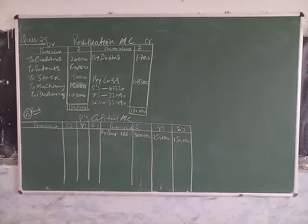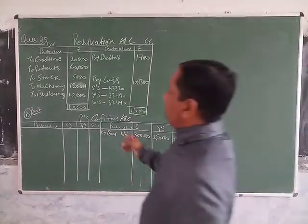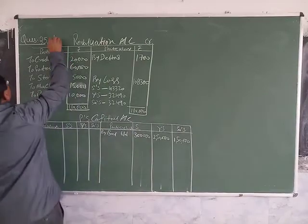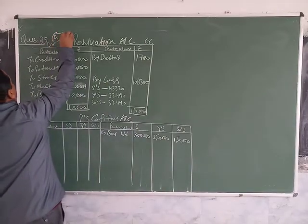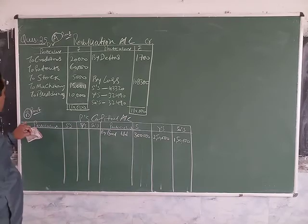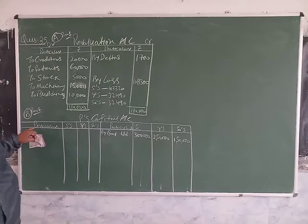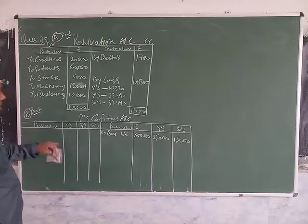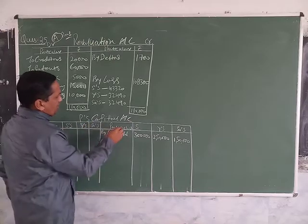We are starting our next part of question number 35. This is part A. After that, we are starting a partner's capital account. This is part B, second video of this question number 35.